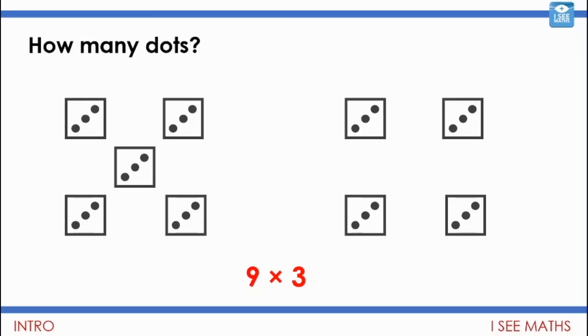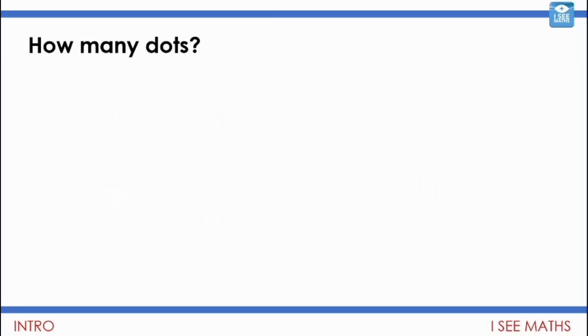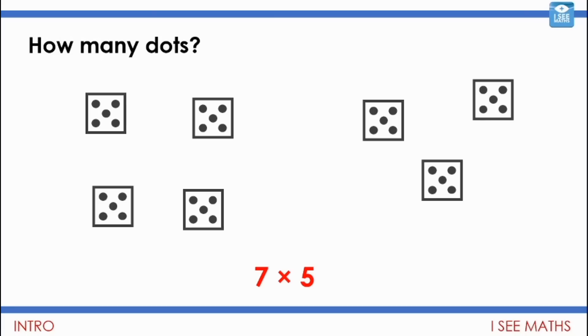Okay, let's have the next one. How many dots this time? Hmm, have a think. What did you see? If you need to, pause the video. Let's have a look though. There were 7 lots of 5. I see 4 lots of 5 on the left. And I see 3 lots of 5 on the right. 7 lots of 5 in total. That is 35 dots in total.